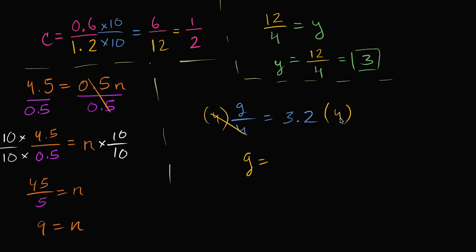Let's see, 3 times 4 is 12, and 2 tenths times 4 is 8 tenths. So it's going to be 12 and 8 tenths. G is going to be 12.8. And you can verify this is right. 12.8 divided by 4 is 3.2.